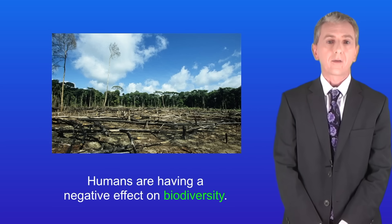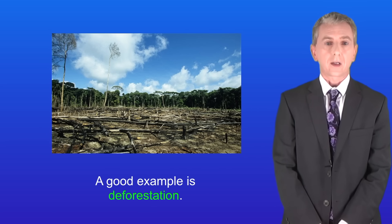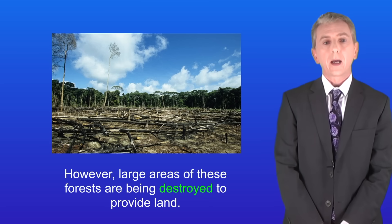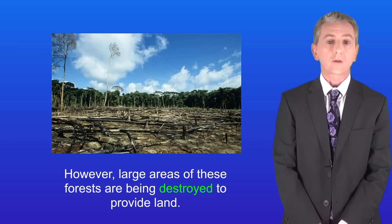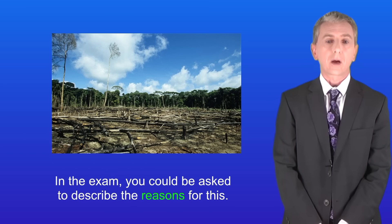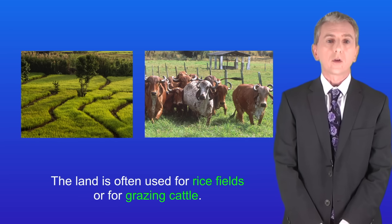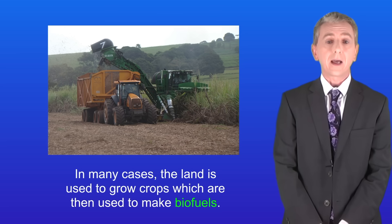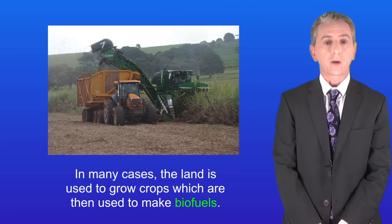Humans are having a negative effect on biodiversity, and a good example is deforestation. Tropical forests contain a very rich biodiversity, however large areas of these forests are being destroyed to provide land. The land is often used for rice fields or for grazing cattle, and in many cases it's used to grow crops which are then used to make biofuels.